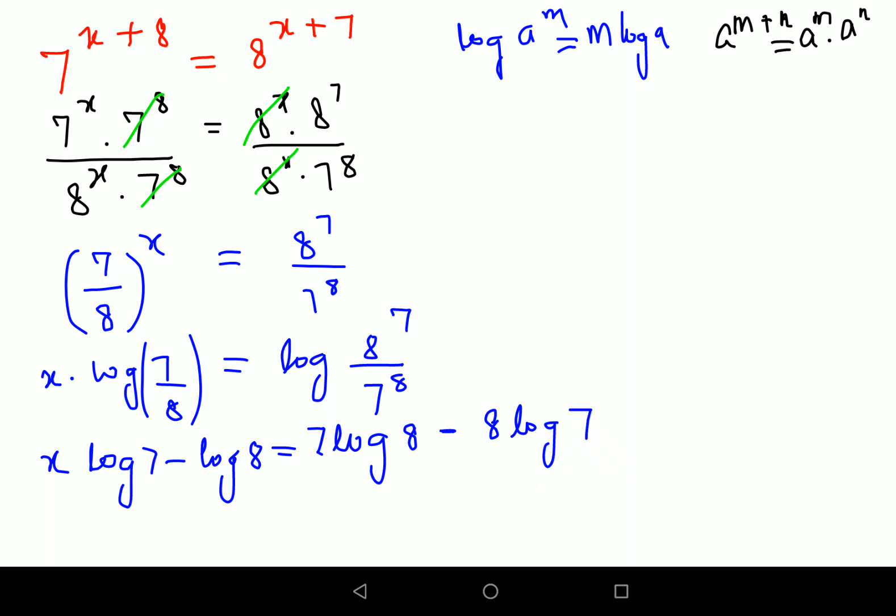Now in order to find the value of x, let's shift everything on one side. So log of 7 minus log 8 we will divide on both sides.